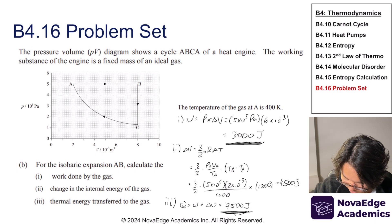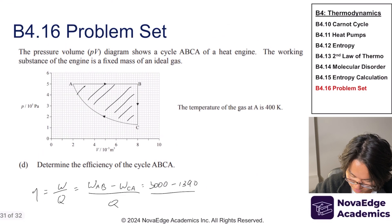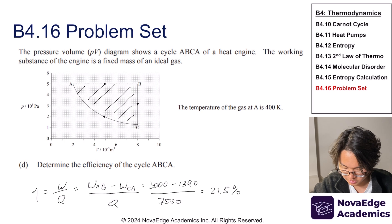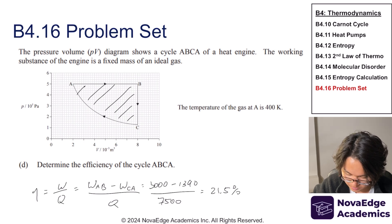Okay, and Q is what we supply to the thermal energy, what we supply to the system. And we actually got this already in part B, I believe. Yep, we already have it as 7,500 joules. So divide this by 7,500 joules, and you get 21.5% efficiency. So that's the efficiency of this cycle.